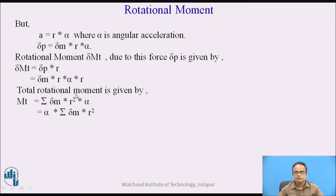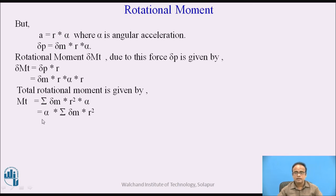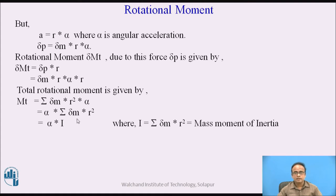The total rotational moment is given by taking the summation of all the rotational moments of the different mass elements present on the wheel. So it is summation of delta m into r squared into alpha. Since alpha is a constant term, the total rotational moment equals alpha into summation of delta m into r squared. This summation of delta m into r squared is nothing but the mass moment of inertia, denoted as I. So we get the expression for rotational moment as I into alpha.